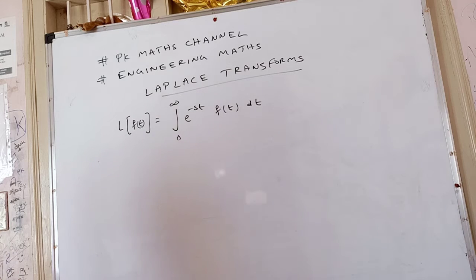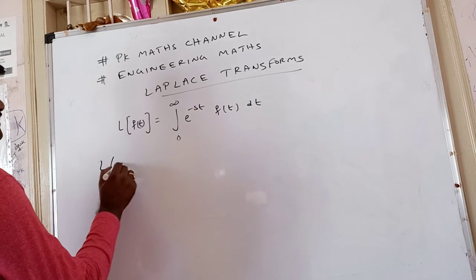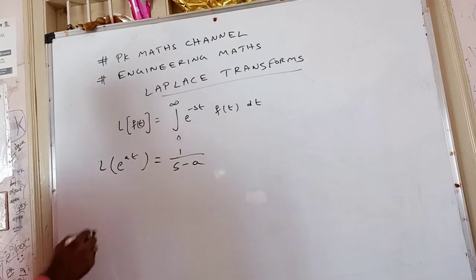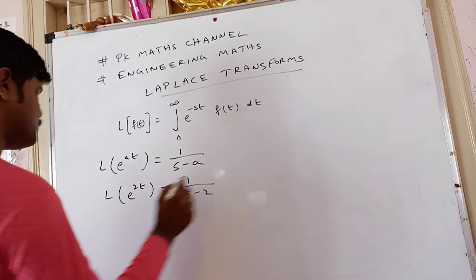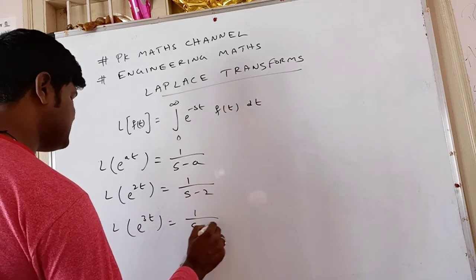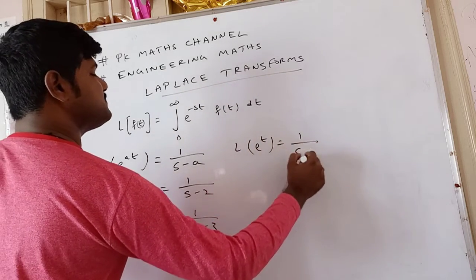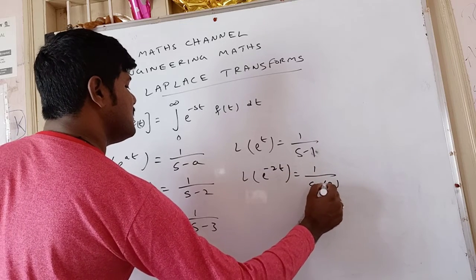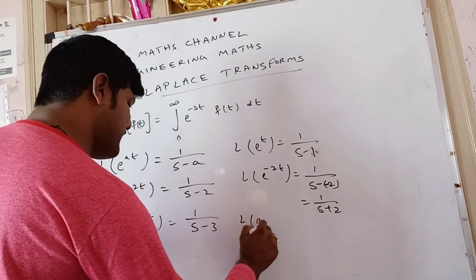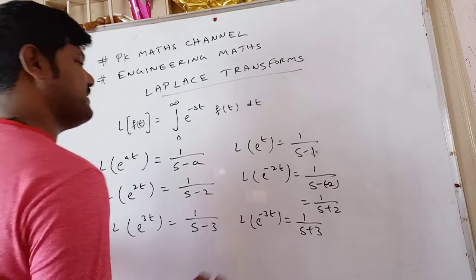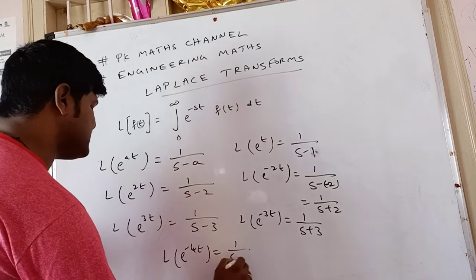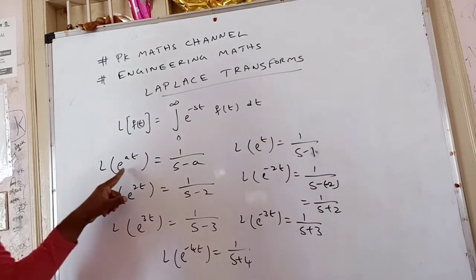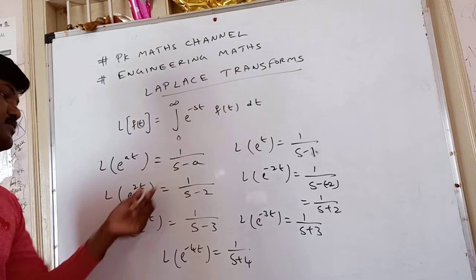Dear students, the next formula to discuss is L{e^(at)}. Laplace of e^(at) is equal to 1/(s − a). For example: L{e^(2t)} = 1/(s − 2), L{e^(3t)} = 1/(s − 3), L{e^t} = 1/(s − 1). Suppose L{e^(−2t)} is given — that is 1/(s − (−2)) = 1/(s + 2). L{e^(−3t)} = 1/(s + 3), L{e^(−4t)} = 1/(s + 4). When the power is negative you get plus in the denominator; when the power is positive you get minus. The formula L{e^(at)} = 1/(s − a) is a very important formula used throughout problems.